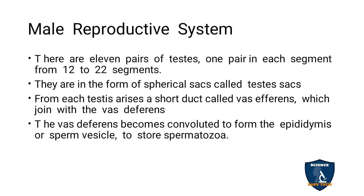In the male reproductive system, testes is the male reproductive organ. There are 11 pairs of testes, starting from the 12th segment to the 22nd segment. In each segment, one pair of testes is seen, and they form spherical sacs called testes sacs.